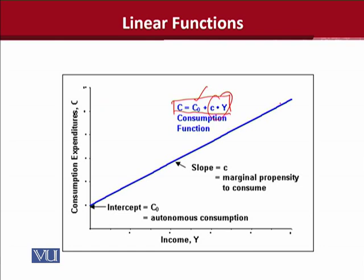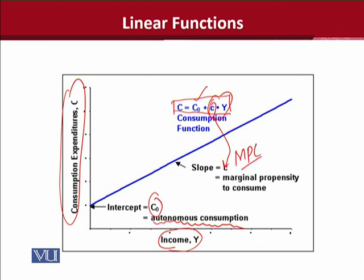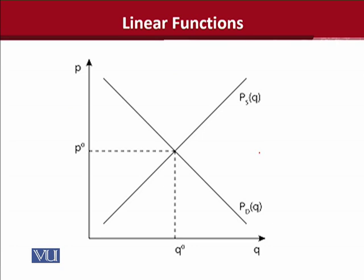we get positively sloped curve and we can see that income is the independent variable and the dependent variable is consumption expenditure. The intercept is represented with c0 and it is also known as autonomous consumption, whereas the slope is represented by the small c and this small c is also known as marginal propensity to consume, alternatively, MPC. So in this way we can see a linear function is used to represent and to understand a consumption function in economic theory. Another example is in front of us.